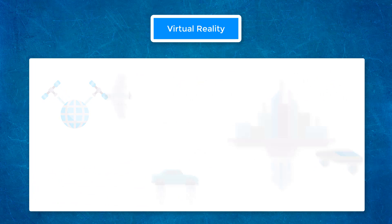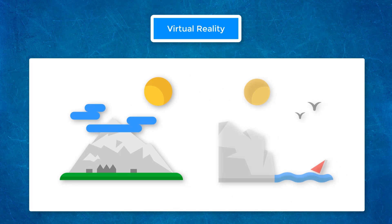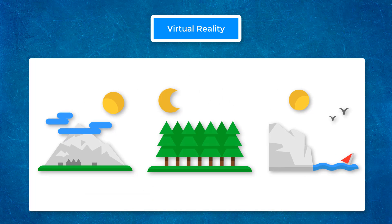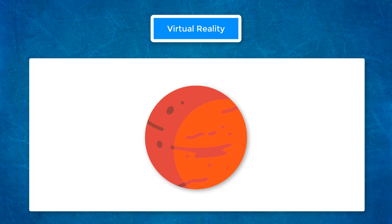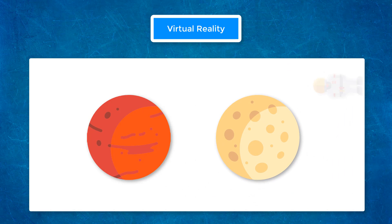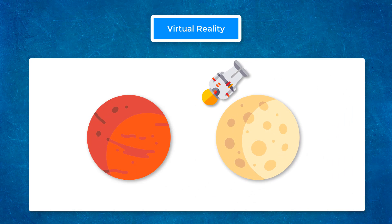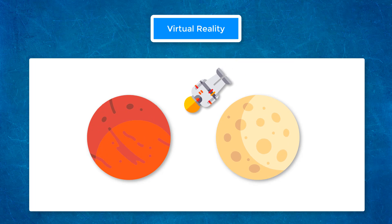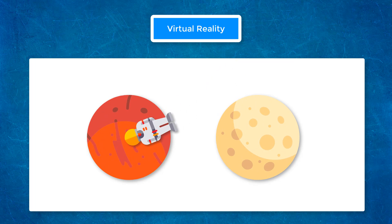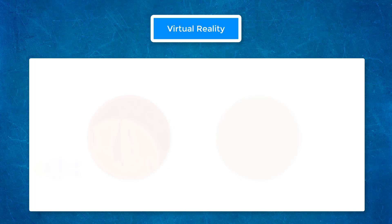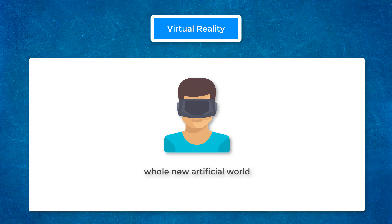In that virtual world, you can be anywhere — from the top of the Himalayas to down in the ocean or lost in the jungles of Africa. With virtual reality, you can go where you have never been. You can experience yourself on Mars or on the moon exploring a whole planet. Also, when you move, your virtual world will also render accordingly just like you are in the real world, and this is because of sensors. In virtual reality, you bring a whole new world in front of your eyes, so your real world is now completely blocked and you cannot see what's happening in it.